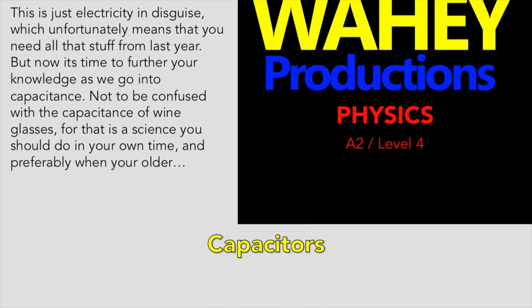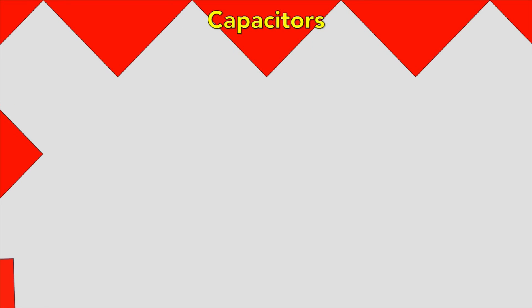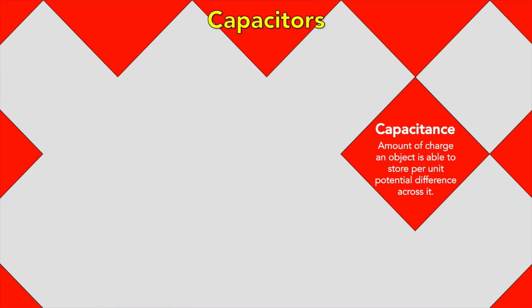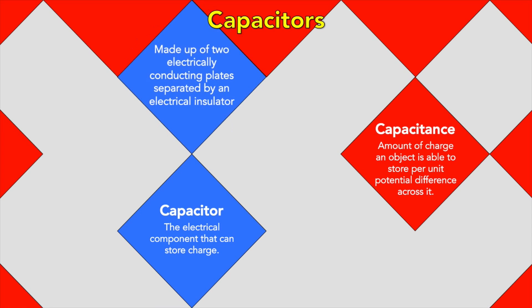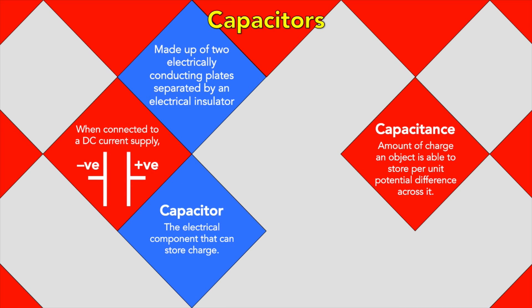Capacitors. The capacitance of an object is the amount of charge it's able to store per unit potential difference across it. A capacitor is the electrical component that can store electrical charge. They're made up of two electrical conducting plates separated by an electrical insulator. When they're connected to a DC current supply, one plate becomes negatively charged and one becomes positively charged. And this is the circuit symbol.